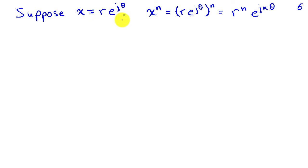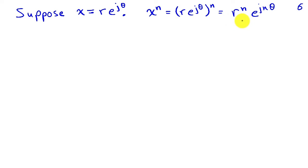This polar coordinate expression, which originated in Euler's formula, can be used to do things that would be difficult in rectangular coordinates. For example, if x is r e to the j theta, raising x to the nth power is straightforward: the magnitude becomes r to the n and the exponent is multiplied by n, so x to the n has magnitude r to the n and phase n times theta.